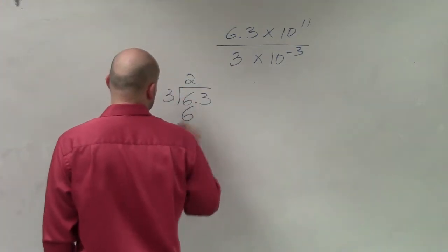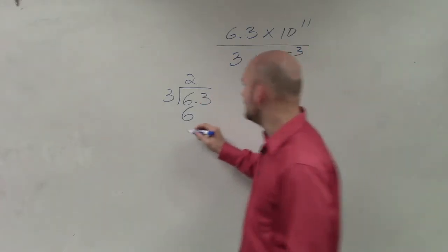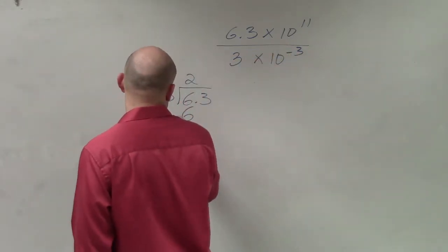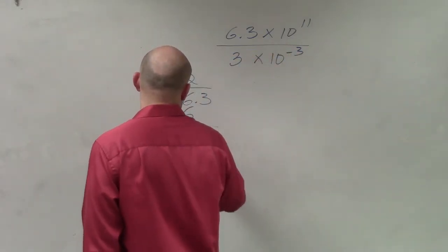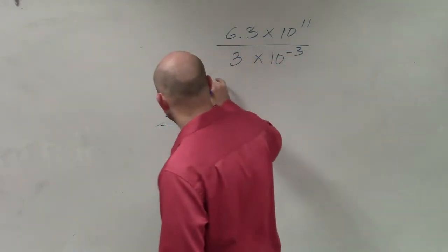2 times 3 is 6. Then I'll subtract that. I get 0. 3 does not go into 0. So then I'm going to place a decimal point.